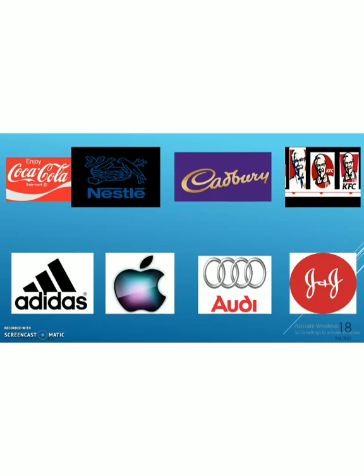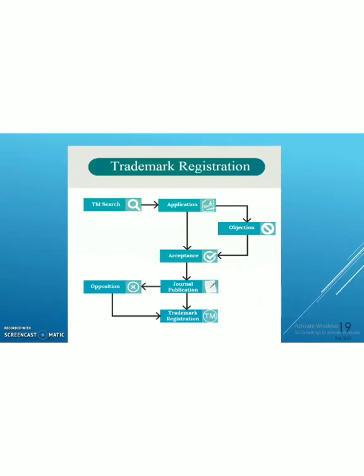These are the symbols of registered trademark, unregistered trademark, and unregistered service trademark. These are some important trademarks you are all familiar with. For trademark registration, the application must be filed; if there is an objection, we have to file the application again. After acceptance, journal publication or advertisement is done for opposition. If there is no opposition, the trademark will be registered.